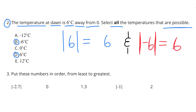Number 2. The temperature at dawn is 6 degrees Celsius away from 0. Select all the temperatures that are possible. Negative 12 degrees Celsius would be 12 degrees away from 0, so that's not possible. Negative 6 degrees Celsius is 6 degrees away from 0.